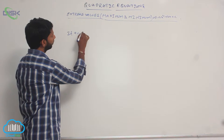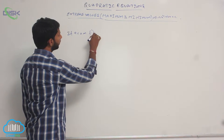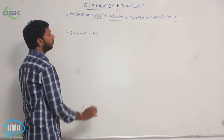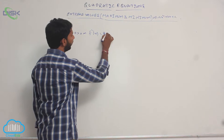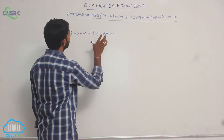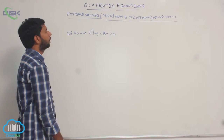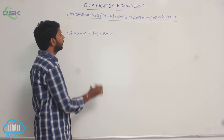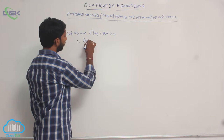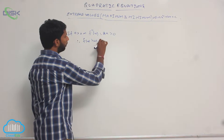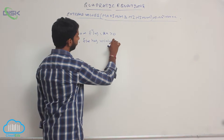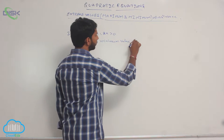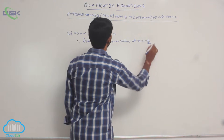If a is less than 0, then f double dash x is equal to... if a is greater than 0, then f double dash x is equal to 2a, which is greater than 0. Here 2a is positive and a is positive, so their product is positive. Therefore f double dash x equals 2a is greater than 0, and f of x has a minimum value at x equal to minus b by 2a.